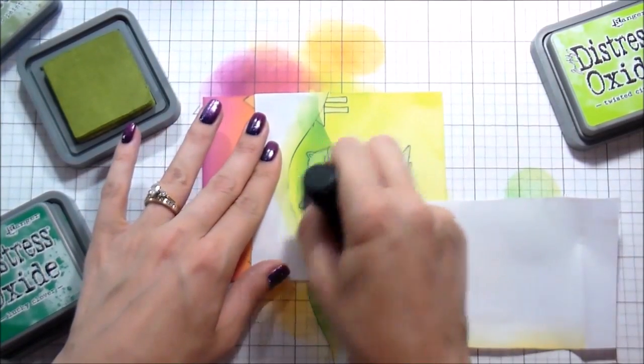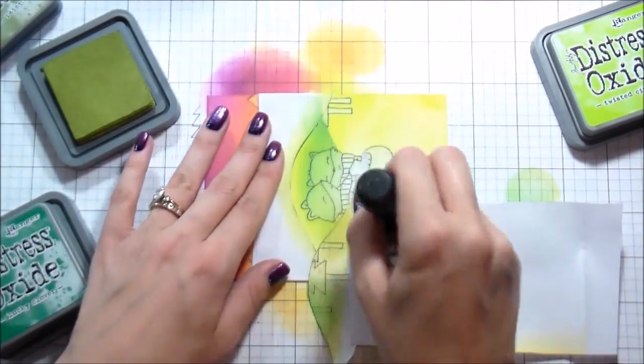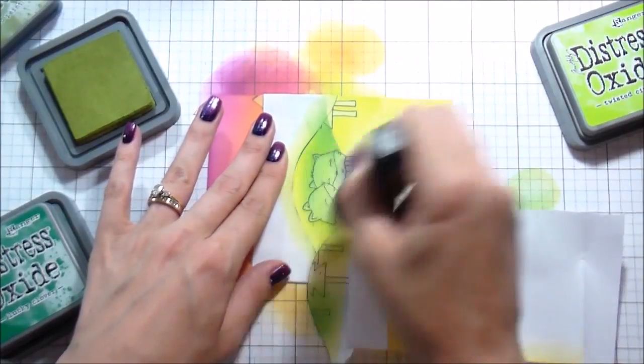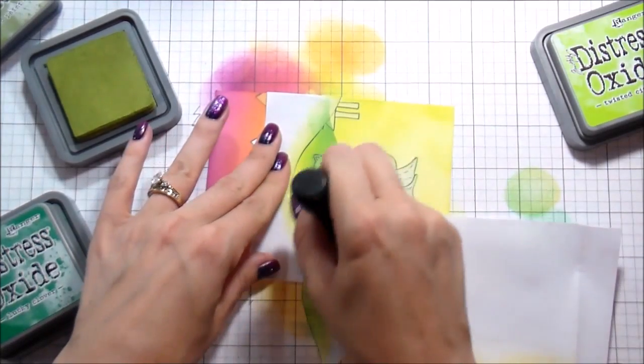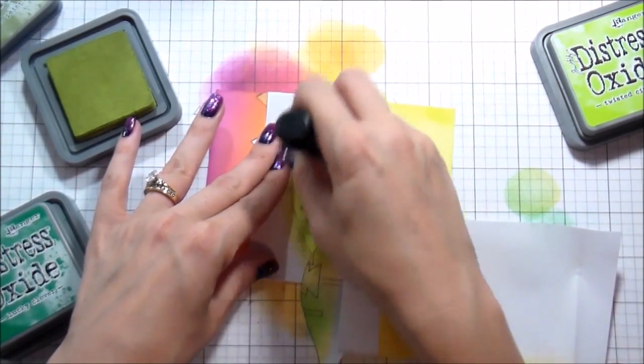Here I didn't have everything masked and I was starting to get a little bit of the darker color on the grasses in front, which I didn't want. So I just grabbed that sheet that I had already been using and put it down to protect my project.